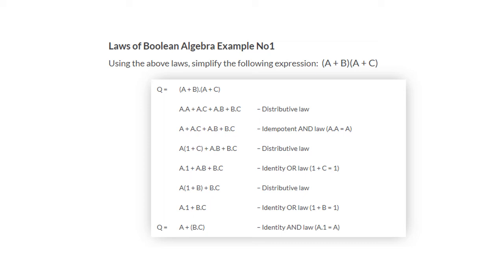Continuing the simplification: a AND 1 equals a itself. Taking a outside from the first two terms, the remaining is (1 OR b) OR (b AND c). Since 1 OR b equals 1 by the identity OR law, we get a AND 1, plus (b AND c), which equals a OR (b AND c).